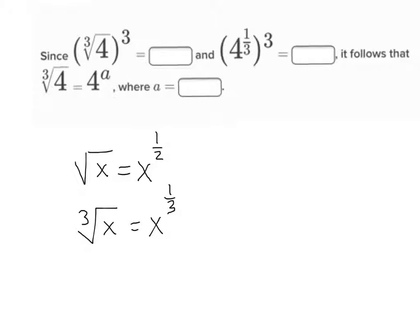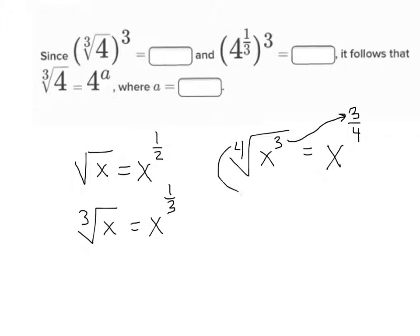So let's say I have the fourth root of x to the third power. What would that be the same thing as? You can't just say three-fourths, because there's an x in the problem. It's x to the three-fourths power. So this three is the exponent, and the four is the root in the exponent.